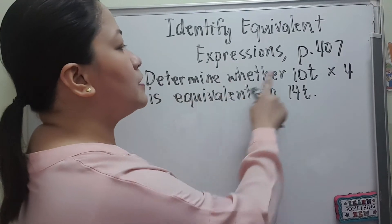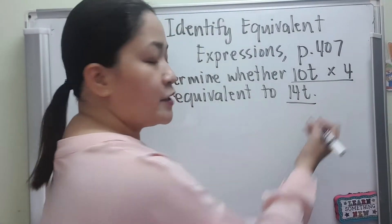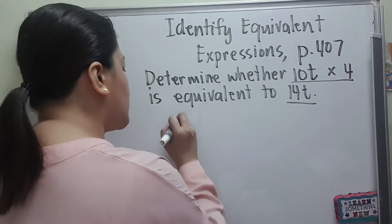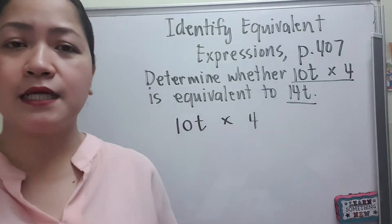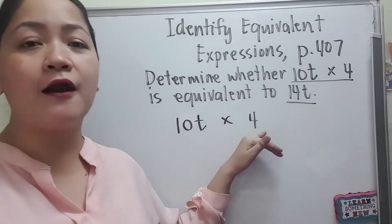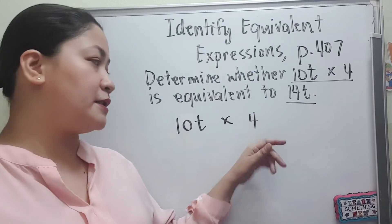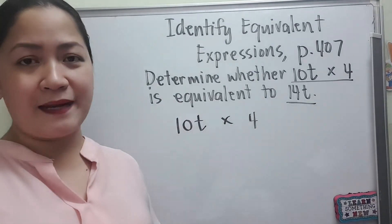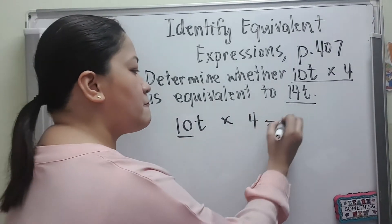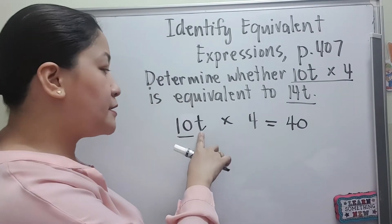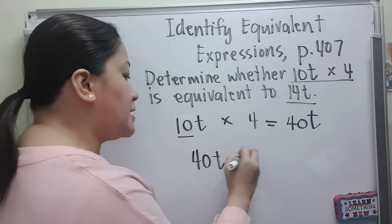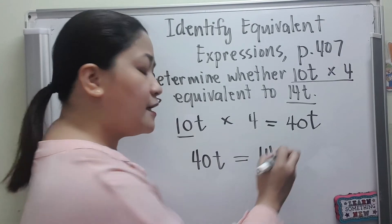Let us determine whether 10t times 4 is equivalent to 14t. Since 14t is already one term, we leave it and solve 10t times 4. It doesn't matter if the terms are like or unlike in multiplication. Here, 10t and 4 are unlike terms — 4 is a numerical term — but we can still multiply them. So 10 times 4 is 40 and then we keep the variable, giving us 40t. Now, is 40t equivalent to 14t? Obviously they are not equal, so 10t times 4 is not equivalent to 14t.